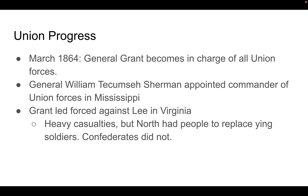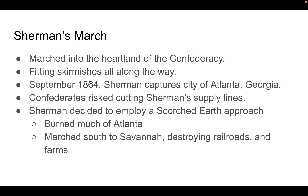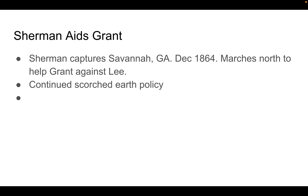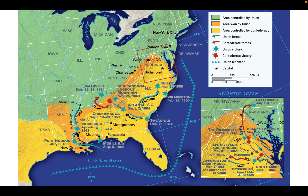General William Tecumseh Sherman was appointed commander of Union forces in Mississippi. Grant led his forces against Lee in Virginia, again trying to capture Richmond. There were heavy casualties on both sides, but the Confederacy was running out of men while the North was not. Sherman marched into the heartland of the Confederacy, and by September 1864 he had captured Atlanta, Georgia. He employed a scorched earth approach — burning everything, destroying railroad tracks — completely decimating the South as he went. Sherman then turned north through the Carolinas to meet Grant in the campaign against Lee in Virginia.